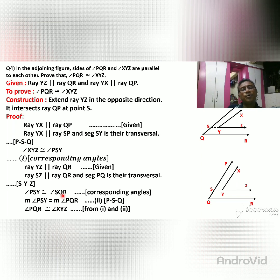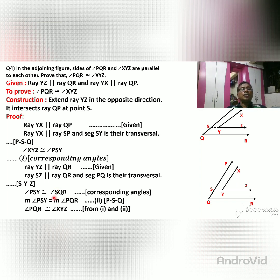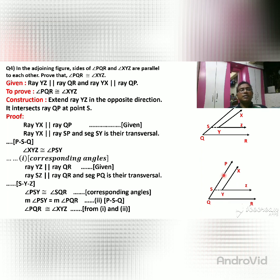From statement 1 and statement 2, by transitivity: angle PQR is congruent to angle XYZ. This is because angle XYZ ≅ angle PSY, and angle PSY ≅ angle PQR, so we conclude angle XYZ ≅ angle PQR. So measure of angle XYZ equals measure of angle PQR. This completes the exercise.